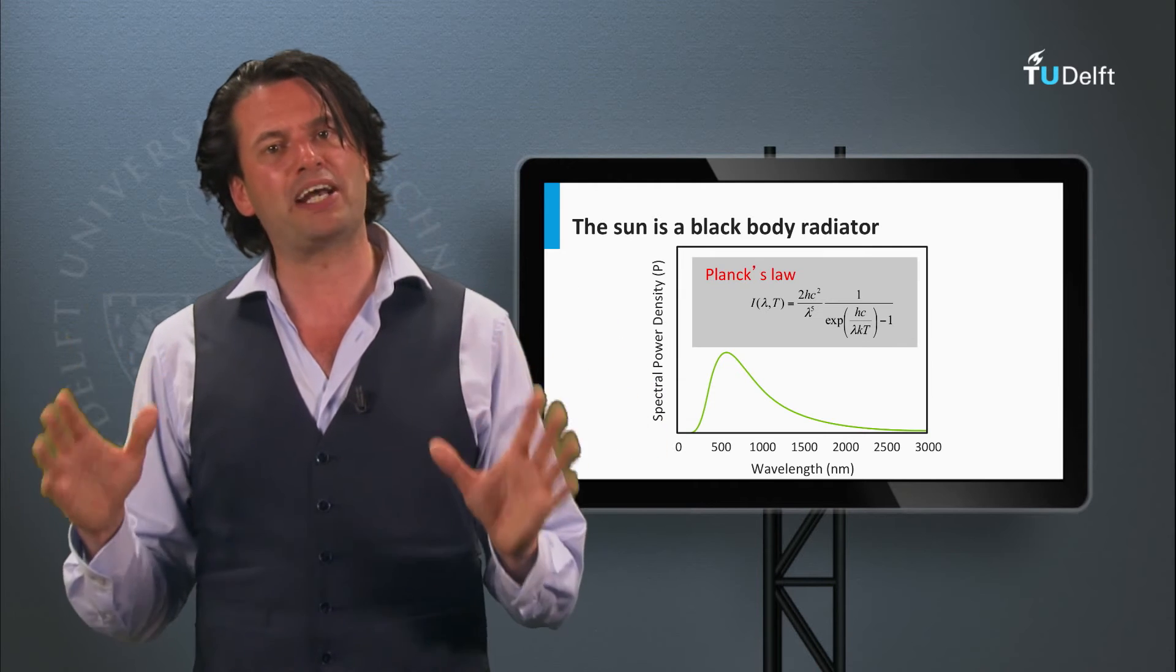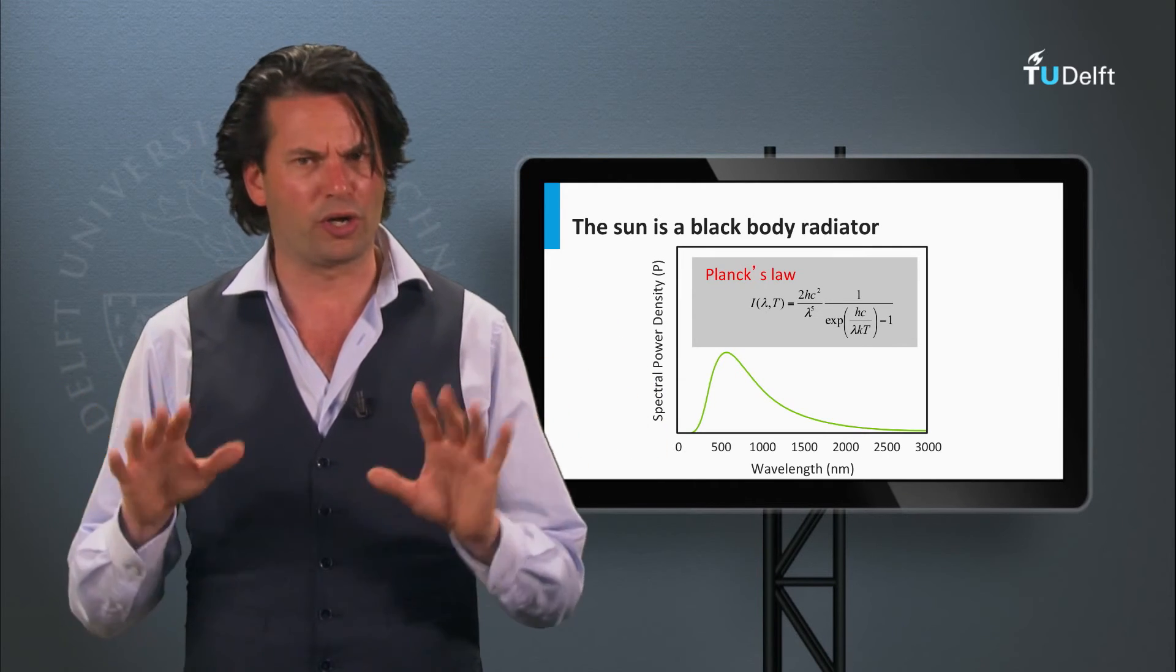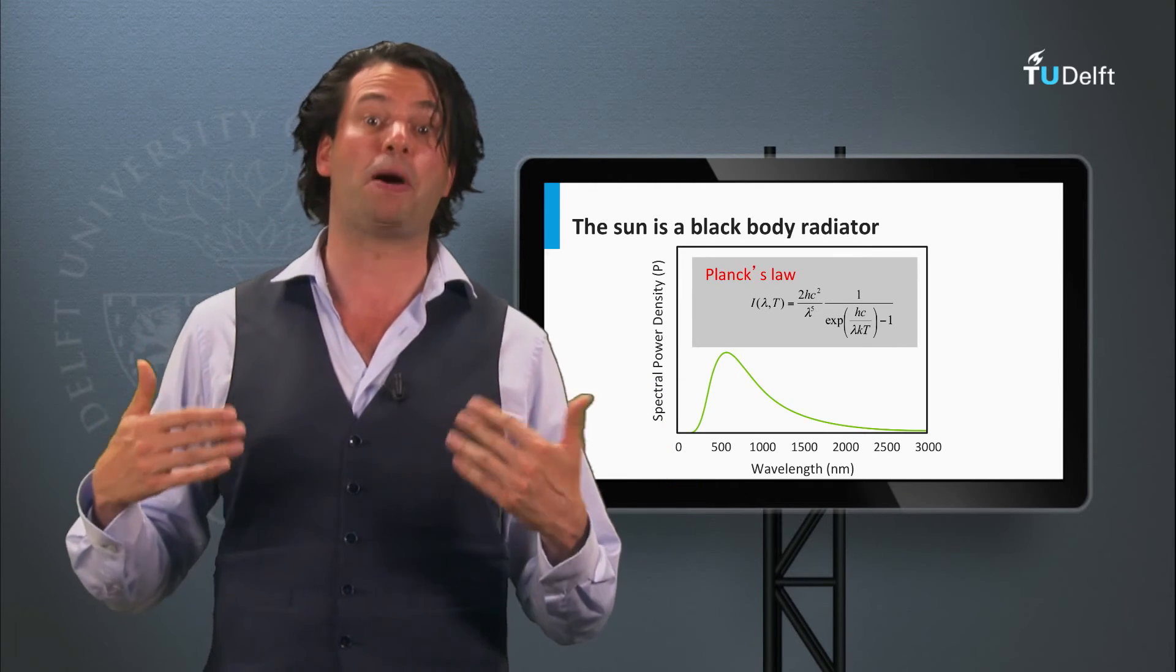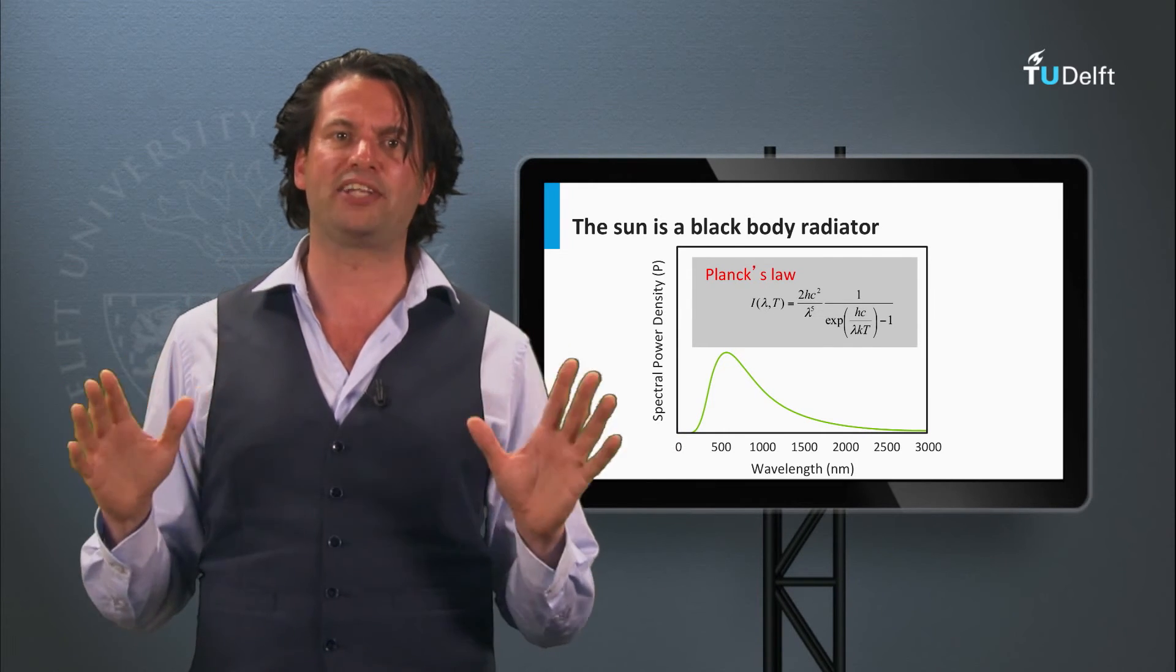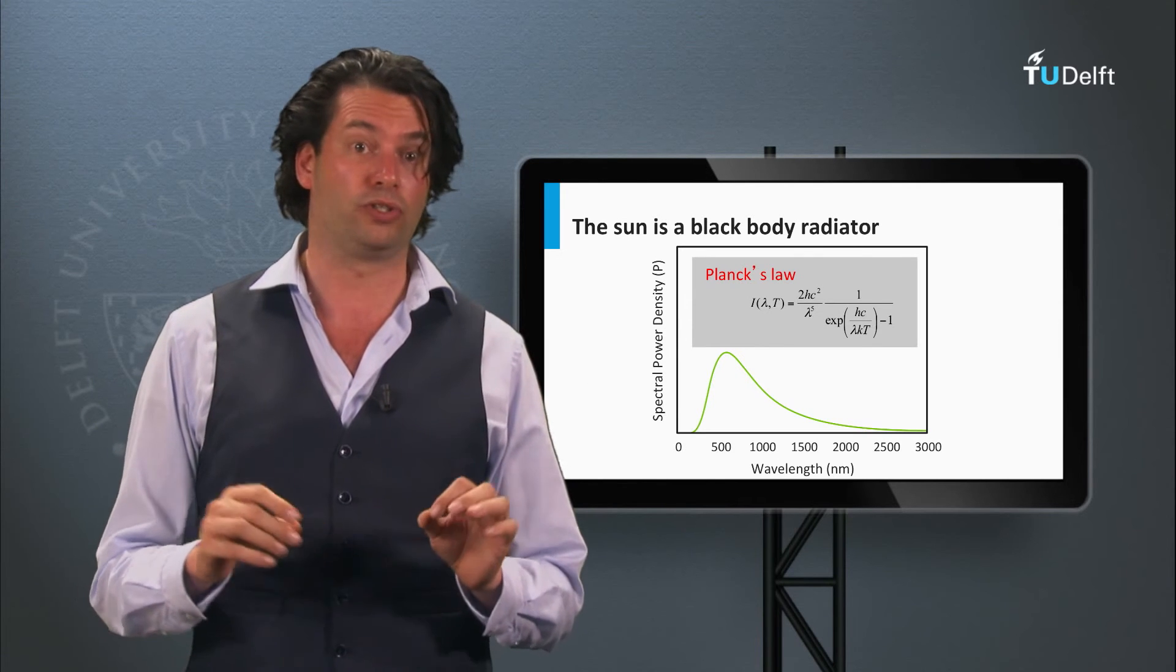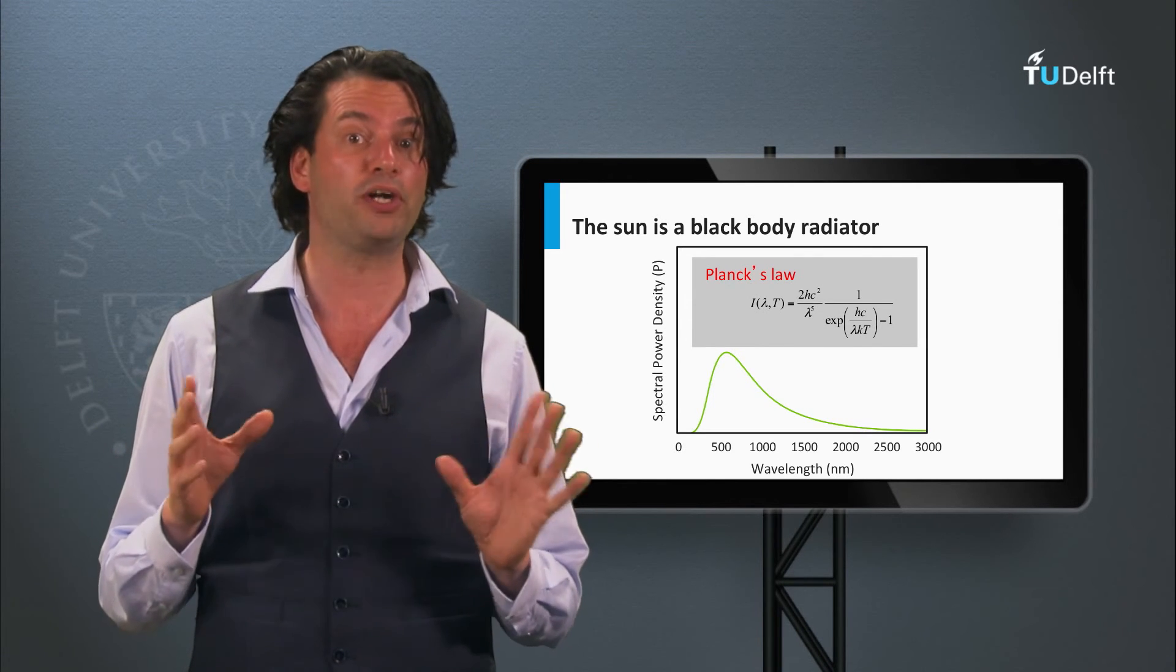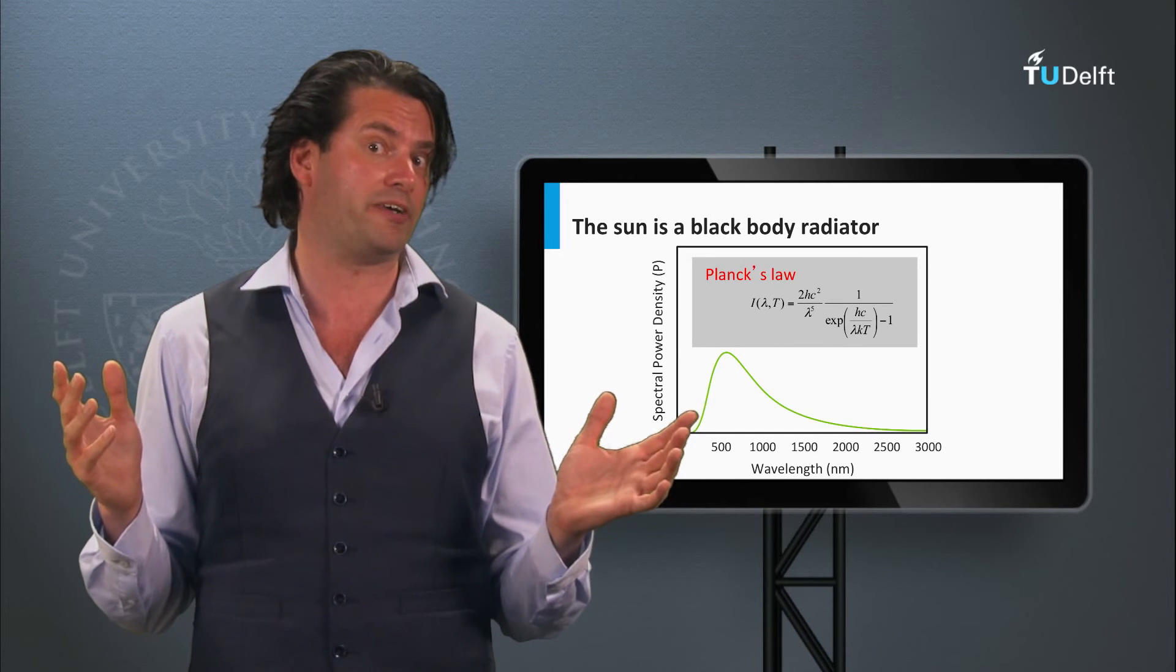How does the spectrum of the Sun look like, or in other words, how does the spectral power density function look like? To human eyes the Sun is a bright object in the sky. The Sun, a so-called black body radiator. What is a black body radiator?